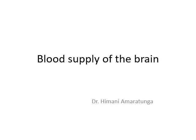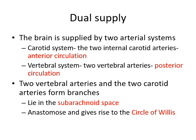We will discuss the blood supply of the brain and the spinal cord. The brain is supplied by two arterial systems: the carotid system and the vertebral system. The carotid system consists of two internal carotid arteries and is called the anterior circulation. The vertebral system consists of the two vertebral arteries and is called the posterior circulation. These come into the subarachnoid space, branch out, anastomose, and give rise to what we call the circle of Willis.